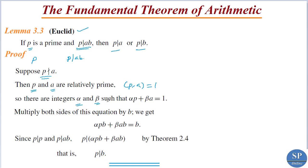So there are integers α and β such that αp + βa = 1 — that is, their linear combination is equal to 1. We can find such α and β. Now multiplying both sides of this equation by b, we get αpb + βab = b. Now clearly p divides pb and also we are given that p divides ab. So p divides p and p divides ab. Therefore, p divides the linear combination αpb + βab.